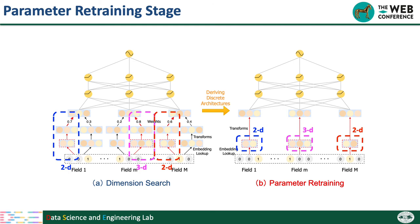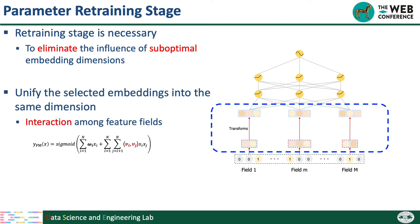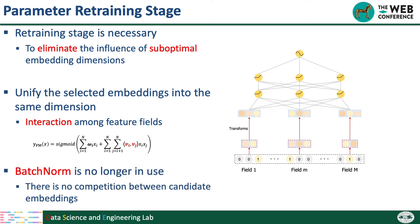Once we have the well-learned weighted sum probabilities, we can select the embedding dimension for each feature field and retrain the model parameters. First, why do we need retraining? Because in the dimension search stage, model performance is influenced by the suboptimal embedding dimensions, so we should remove them and retrain. Second, why do we still unify selected embeddings into the same dimension? Because most deep recommendation systems capture interactions between feature fields via inner product, which requires vectors of the same dimension. Finally, since in the retraining stage there is no competition between candidate embeddings, we can remove the batch normalization functions.